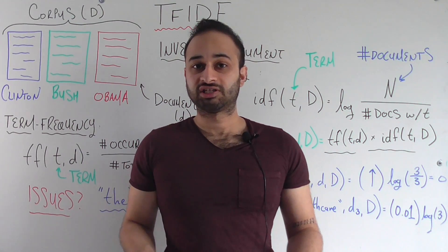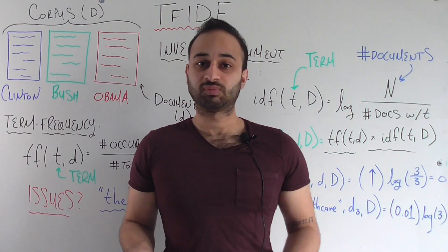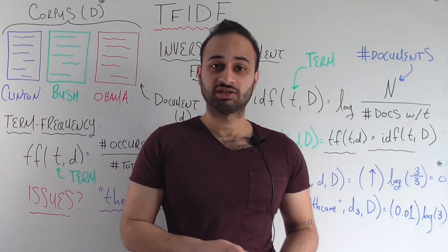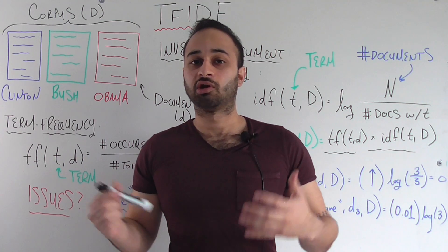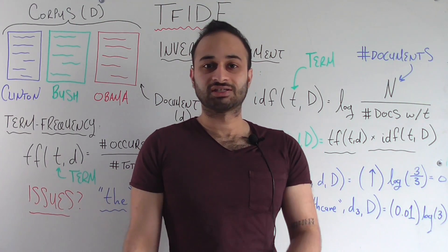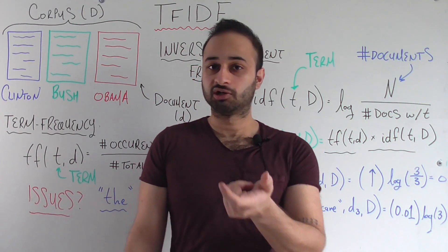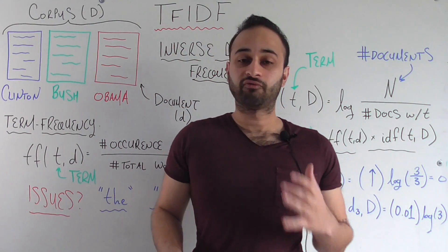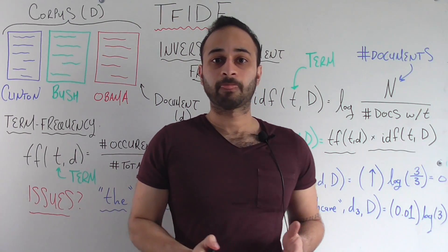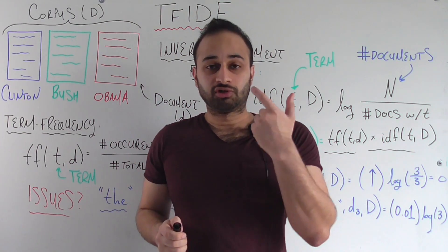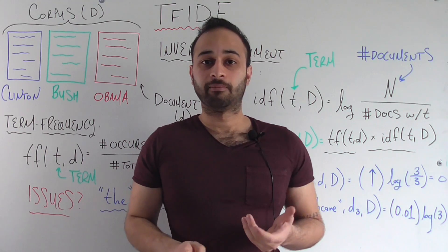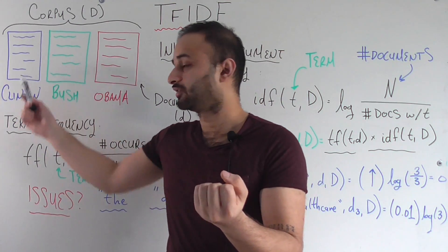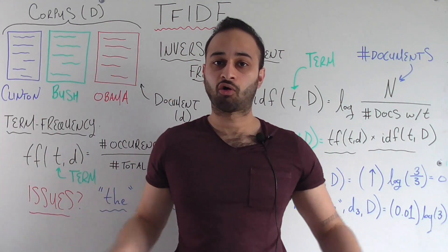Just to have a real example, let's say we're looking at three inauguration speeches from recent presidents — the inauguration speech from President Clinton, President Bush, and President Obama. The question we want to answer is: for any given term that appears in one of these documents — each one is called a document, little d, and the entire collection is large D — we want to get a measure, some kind of number that says how important is that term for, let's say, the Clinton inauguration speech relative to the entire corpus.